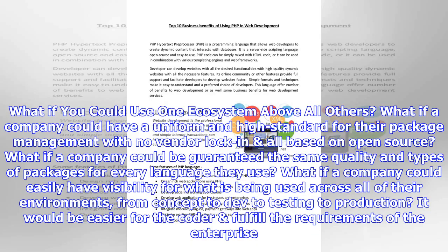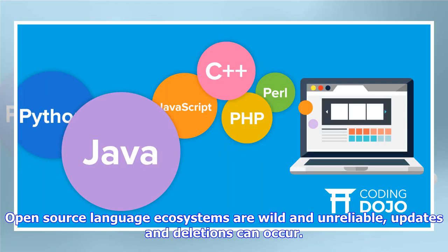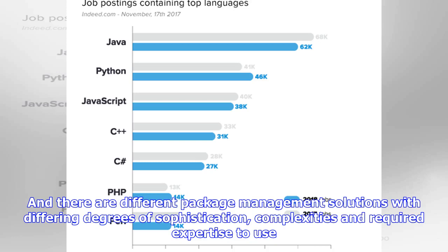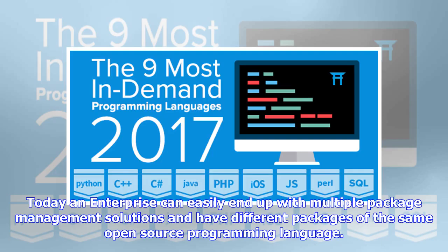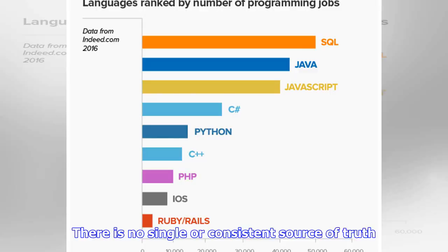What if you could use one ecosystem above all others? What if a company could have a uniform and high standard for their package management with no vendor lock-in? Open source language ecosystems are wild and unreliable — updates and deletions can occur. There are different package management solutions with differing degrees of sophistication, complexities and required expertise to use. Today an enterprise can easily end up with multiple package management solutions and have different packages of the same open source programming language. There is no single or consistent source of truth.